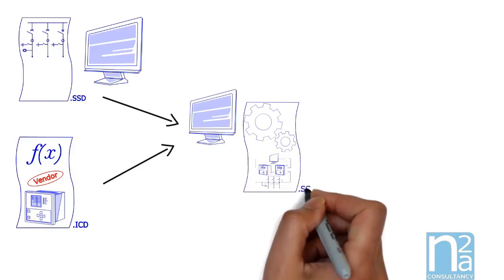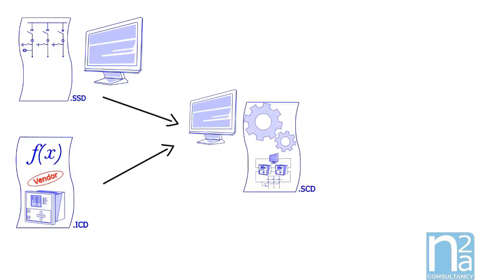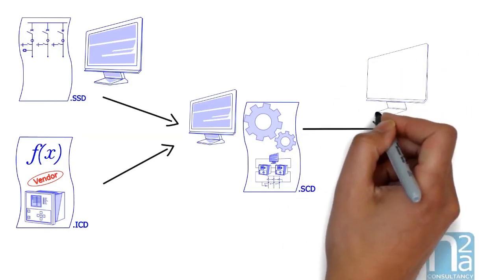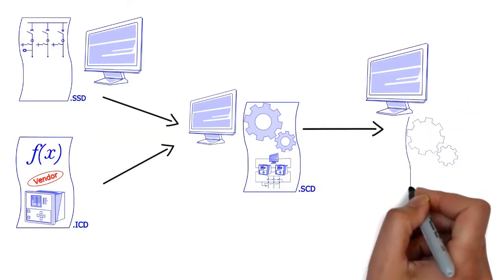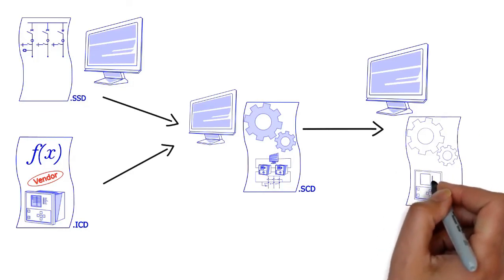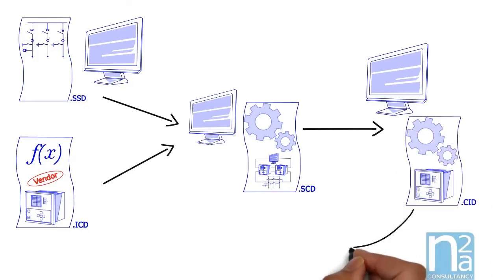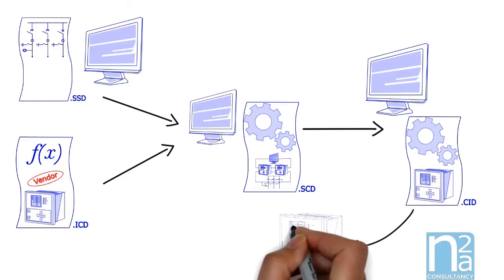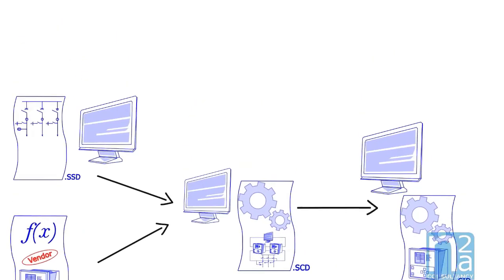These two files are used in a system configurator to create a new file which is called SCD, Substation Configuration Description. During this configuration phase, all interlocks between IEDs are also defined. The last phase consists to extract from this SCD file individual configuration IED descriptions, which is called CID file. This file could be then transferred to IEDs to set automatically their configuration. Even if this looks simple, multiple possibilities make this phase quite complex, and standardization of solutions is highly recommended.